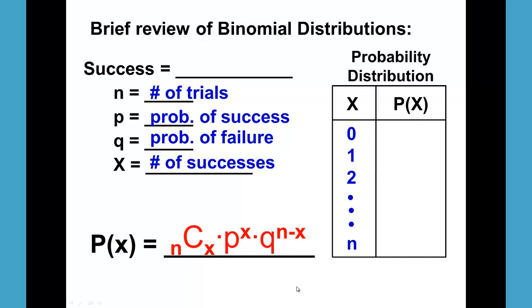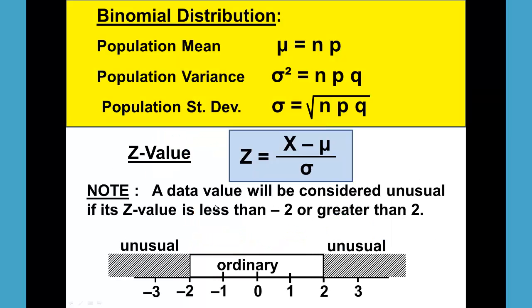We're picking up on the second and third goal for binomial distribution, which is finding the mean and standard deviation and determining whether a value is ordinary or unusual.